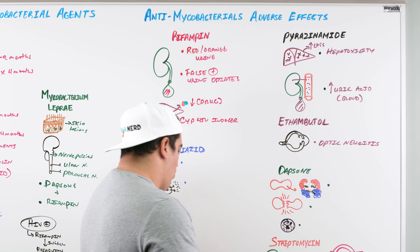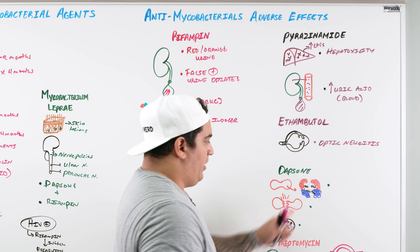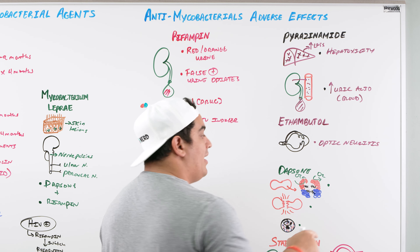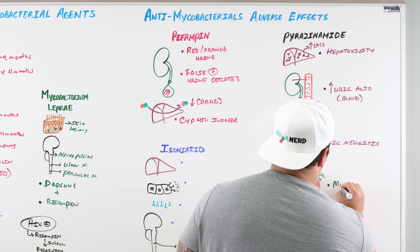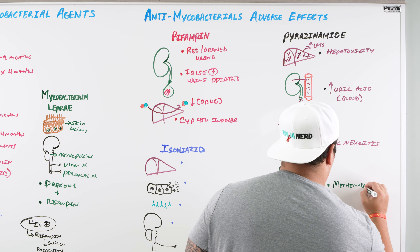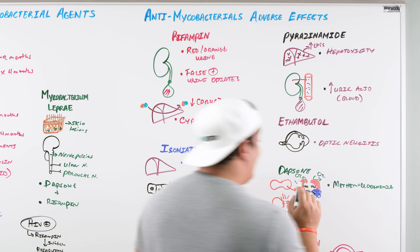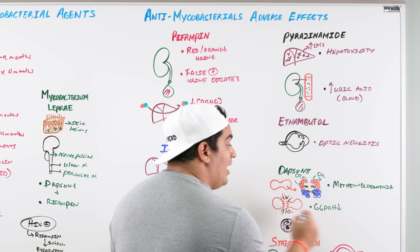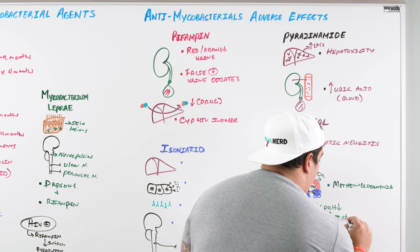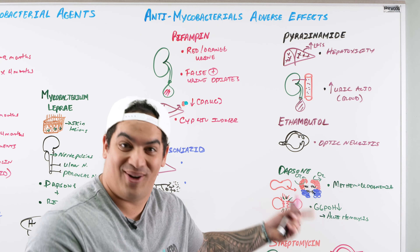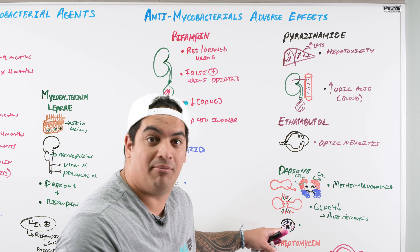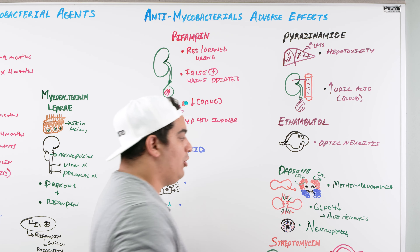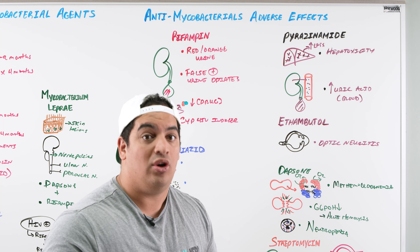Dapsone has three major adverse effects to watch out for. First, it can oxidize hemoglobin to its ferric form, preventing oxygen binding and causing a cytotoxic hypoxia — this is called methemoglobinemia. Second, if a patient has G6PDH deficiency and you give them dapsone, it can trigger an acute hemolytic crisis — similar to nitrofurantoin, fluoroquinolones, and Bactrim. Third, dapsone can suppress the production of neutrophils, causing neutropenia.